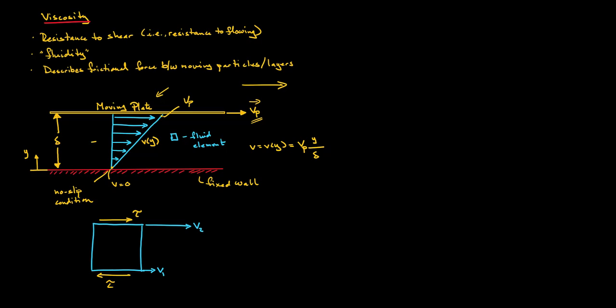Given this velocity profile, the velocity is not uniform — each layer of fluid moves relative to the layers above and below it. Since there is relative motion between layers of fluid, we will have friction between adjacent layers. If we zoom in on a fluid element, this fluid element experiences a shear stress due to the viscosity between the layers. The shear stress is given by the variable τ (tau).